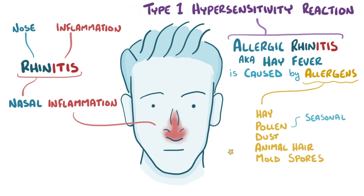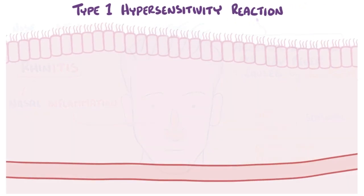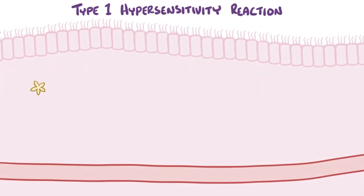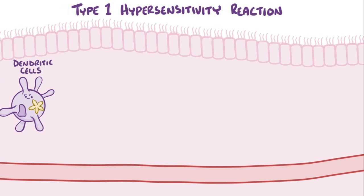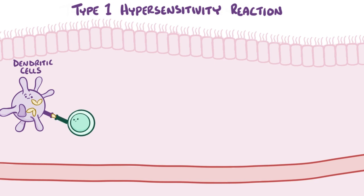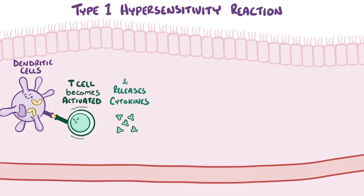So let's say that a bit of pollen enters the nose. It can get picked up by a dendritic cell, which is a type of immune cell that gobbles up the foreign particle and presents it to a nearby lymphocyte called a T cell. If that T cell gets activated, it kicks into action, producing cytokines which help to get other immune cells involved.